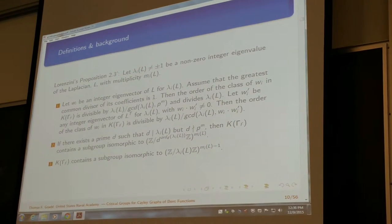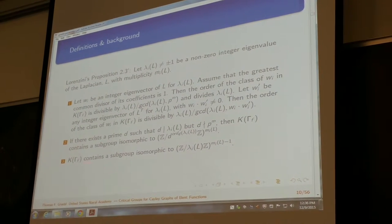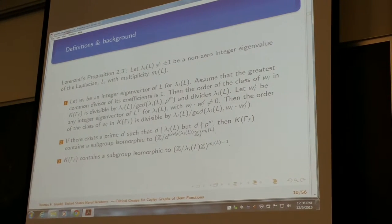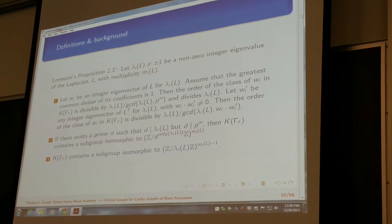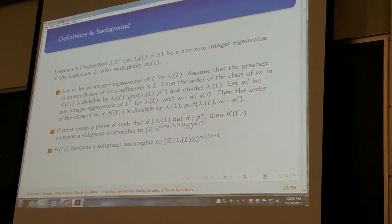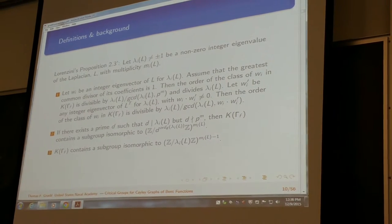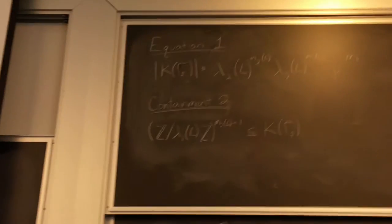I also studied this proposition by Lorenzini, which really what we focused on was the third item, that the critical group contains a subgroup isomorphic to Z mod lambda sub i of L to the multiplicity of lambda sub i of L minus 1, which is contained in 2 up here on the board because I'll also be using that later as well.